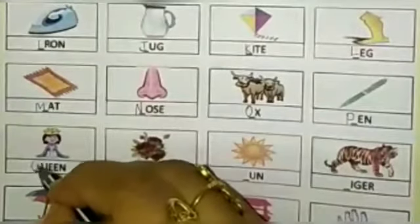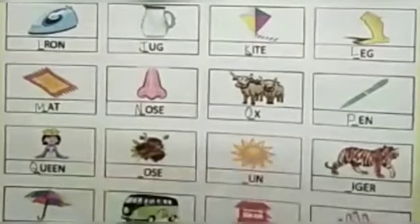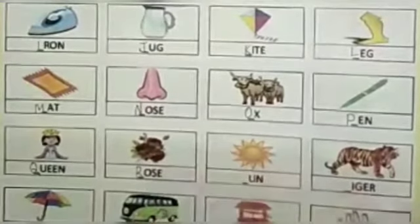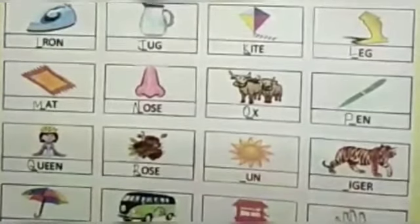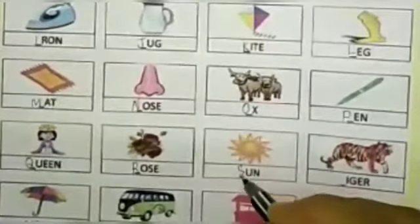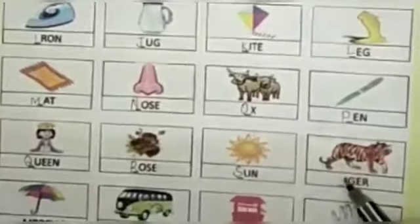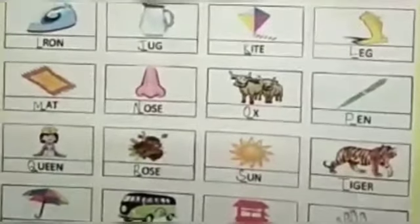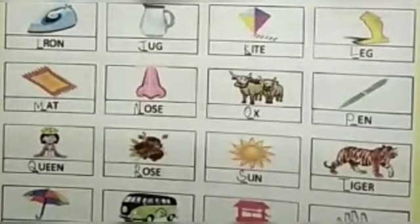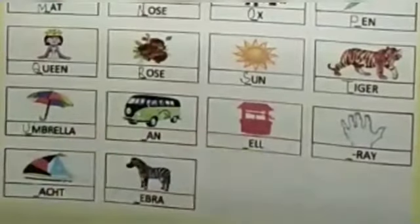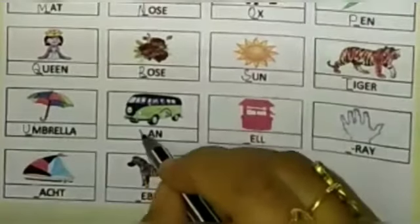Queen. Q-U-E-E-N. Queen. Rose. R-O-S-E. Rose. Sun. S-U-N. Sun. Tiger. T-I-G-E-R. Tiger. Umbrella. U-M-B-R-E-L-L-A. Umbrella.